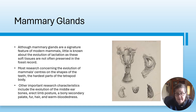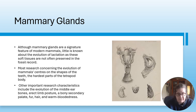All mammals - including us, and we're mammals - have mammary glands. These are koala mammary glands, which are in their pouch, but we have ours on our chest and other mammals have them in various places, mostly the chest area. Mammary glands are a signature feature of modern mammals. Little is known about the evolution of lactation as these soft tissues are not often preserved in the fossil record. Most research concerning the evolution of mammals centres on the shapes of teeth - the hardest parts of the tetrapod body. Other important characteristics include the evolution of the middle ear, erect limb posture, a bony secondary palate, fur, hair, and warm-bloodedness.